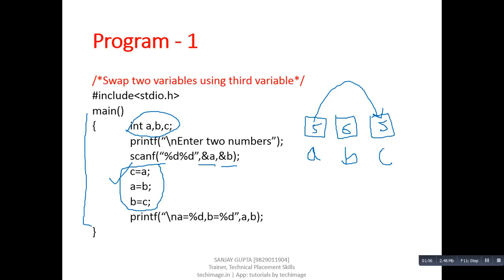Now we can easily assign the value of B inside A, so the value of A will be removed and the value of B, which is 6, will be stored inside A. Then we assign the value of C into B, so C holds 5, which is stored inside B. Now the value of B becomes 5. Previously A was 5 and B was 6; now A is 6 and B is 5.